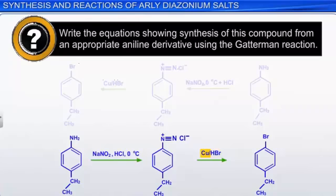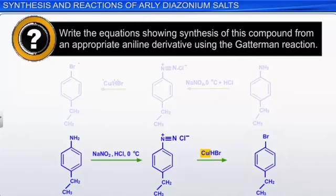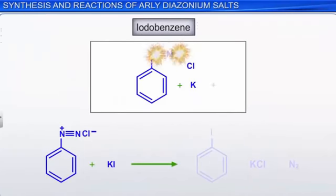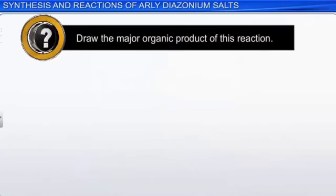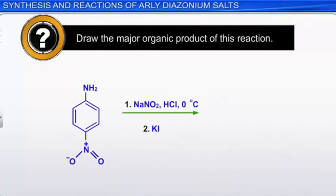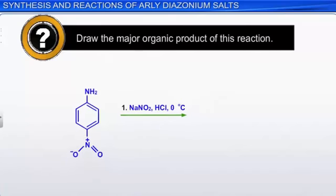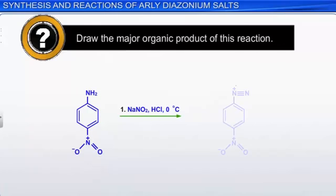The diazonium group can be replaced by iodine if the diazonium salt solution is treated with potassium iodide, forming iodobenzene as the primary organic product. Try to answer this question: draw the major organic product of this reaction. Step 1 produces an aryl diazonium ion, and in step 2, treatment with potassium iodide replaces the diazonium ion with iodine.